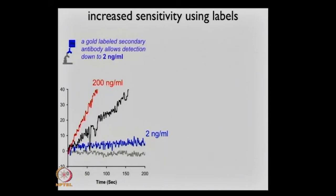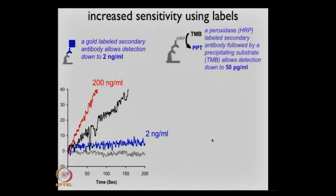At that point, the noise is the noise of the detector itself. So in order to go better than that, we have to do a little bit more signal averaging. We can also do a different type of labeling — this is a precipitation assay. Here's our initial antigen, then you put in the antibody for digoxin.